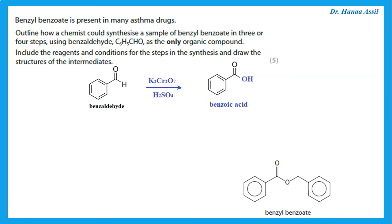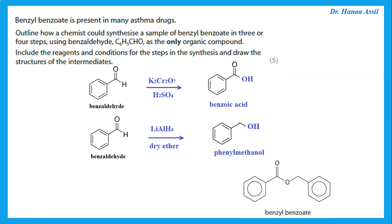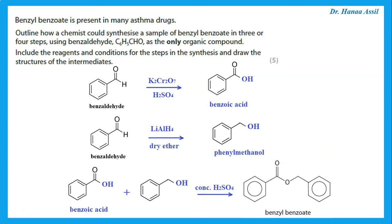We also need to make the other component: a benzene ring with an extra carbon and an OH group. Using benzaldehyde reduction with lithium aluminium hydride in dry ether gives phenylmethanol. Then we can react benzoic acid with phenylmethanol in a Fisher esterification using concentrated sulfuric acid to give the final phenylbenzoate product.